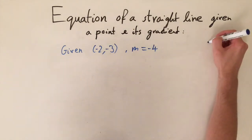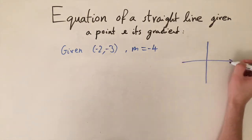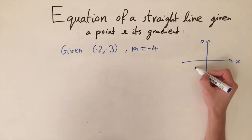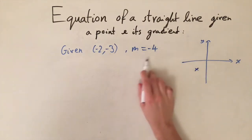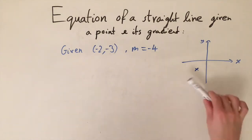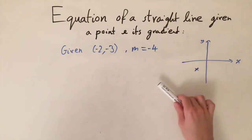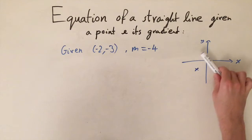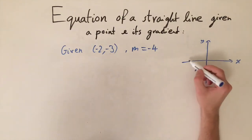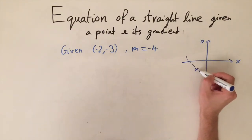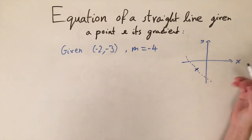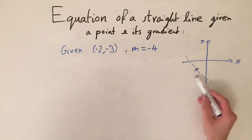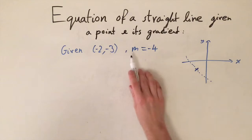Let's think graphically about what this means. If we have the plane with x and y axes, we're given a point — in this case (-2, -3), somewhere around here — and we're also given the gradient, which is minus 4, telling us how steeply the line goes. Moving this gradient along the plane and matching it to the point, there's only one solution: one line that passes through a given point with a given gradient.